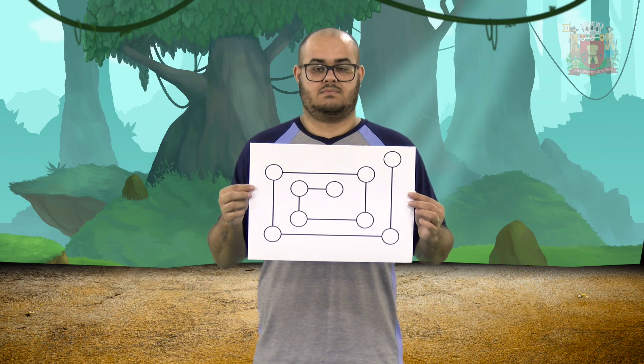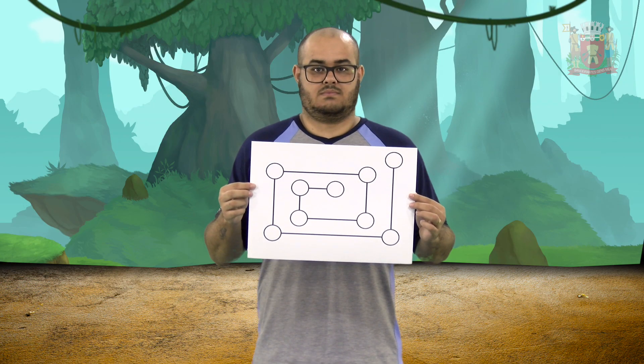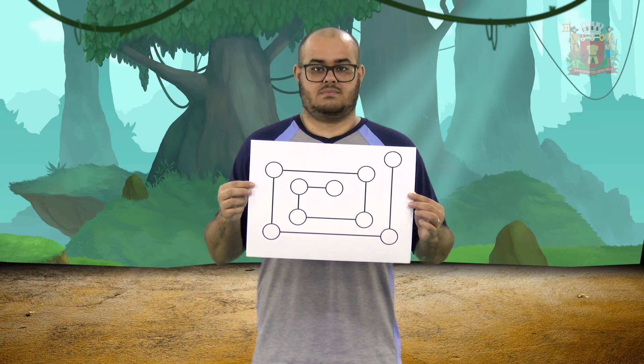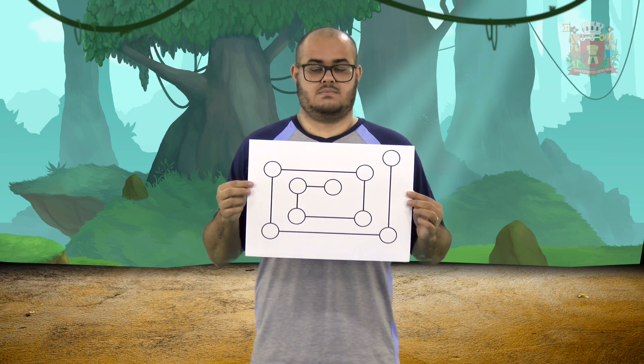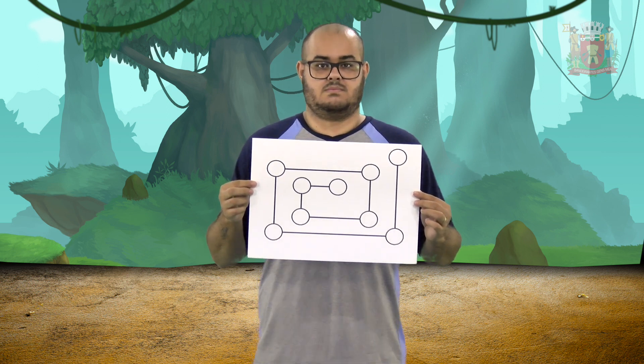Primeiro, desenharemos um labirinto na folha. Em cada junção de linhas, desenharemos um círculo, dessa forma.